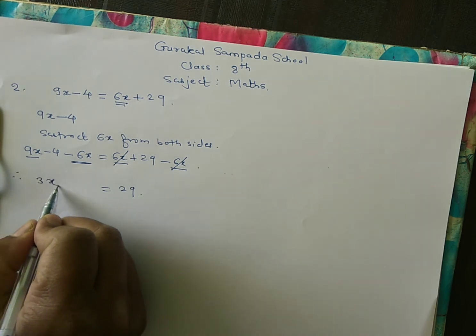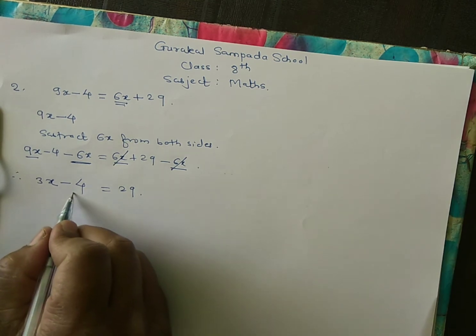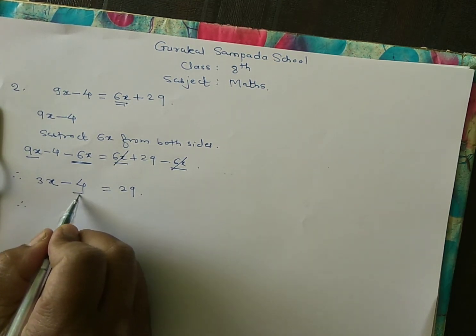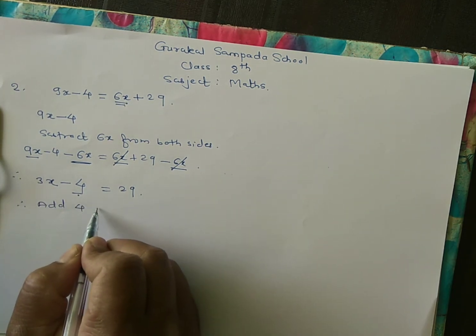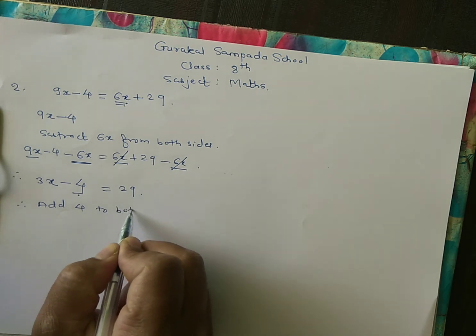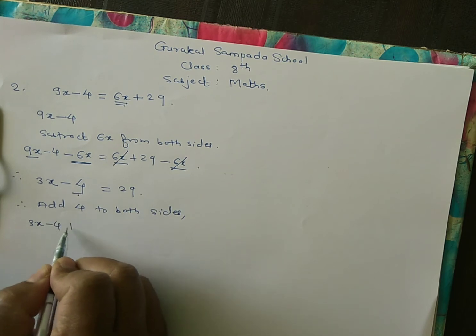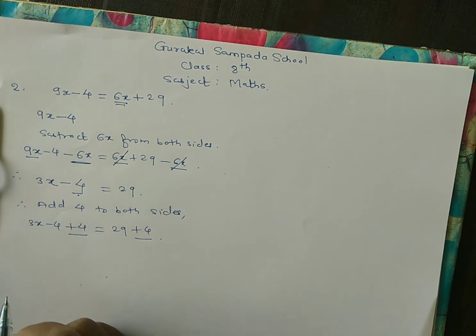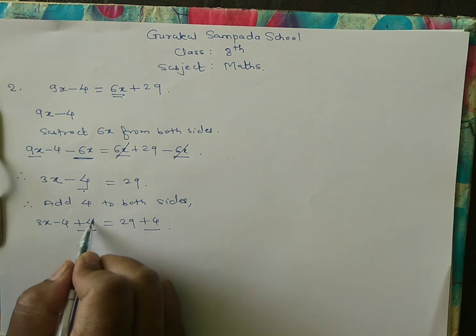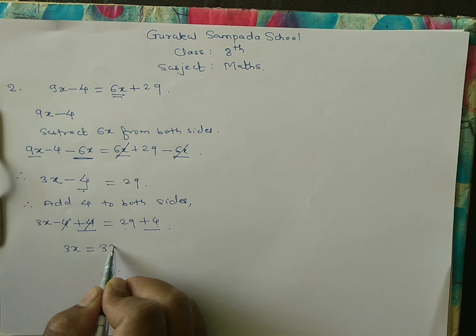Now to cancel the minus 4, we add plus 4 to both sides. So 3x minus 4 plus 4 equals 29 plus 4. Minus 4 plus 4 becomes 0, so 3x equals 29 plus 4, which is 33.